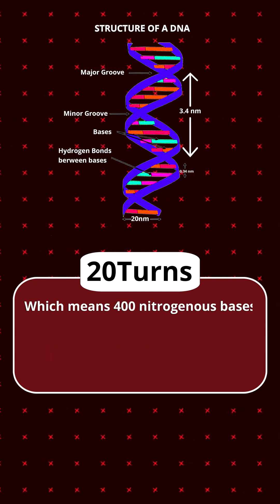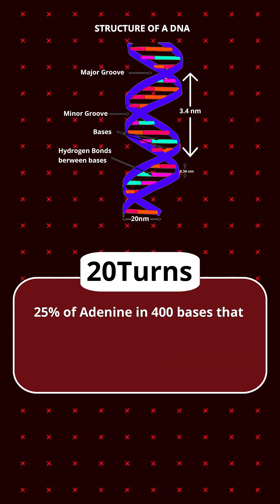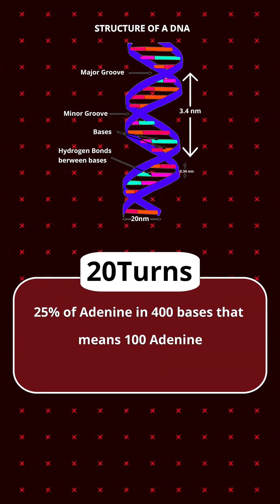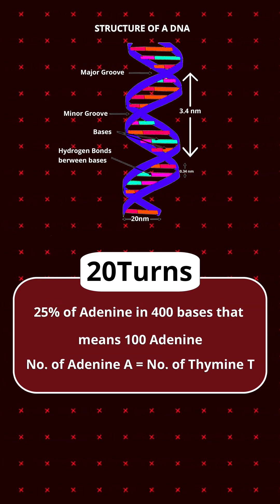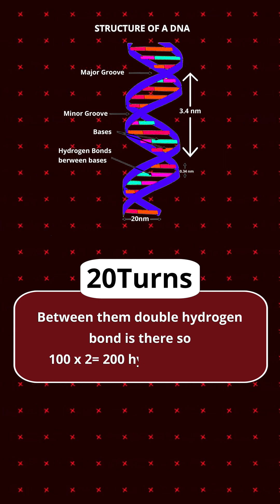Out of 400 nitrogenous bases, adenine constitutes 25%, which means 100 adenine. The number of adenine equals the number of thymine, so thymine is also 100. Between them a double hydrogen bond is present, so 100 into 2 gives 200 hydrogen bonds.